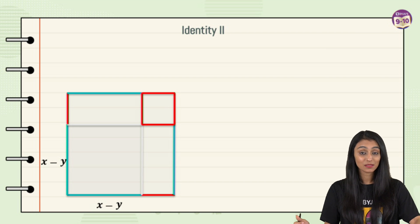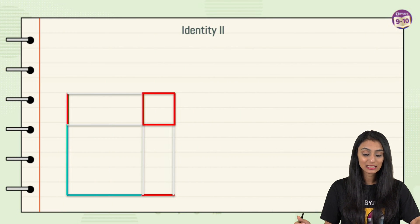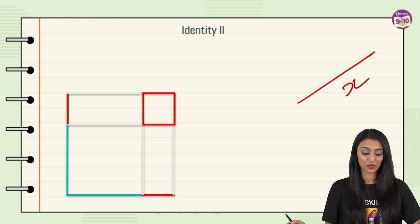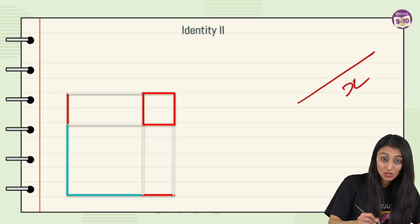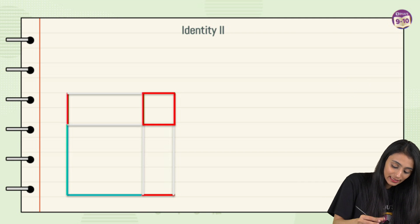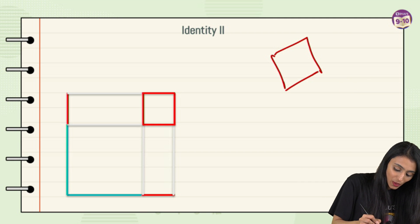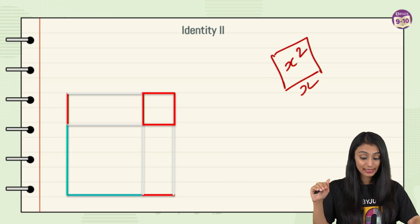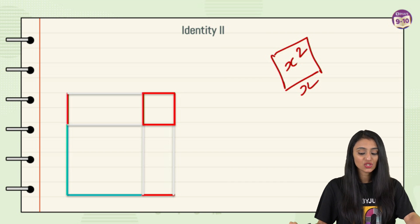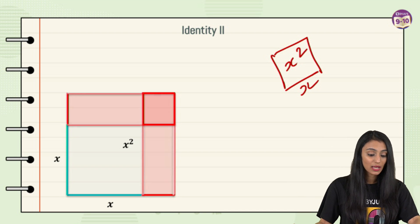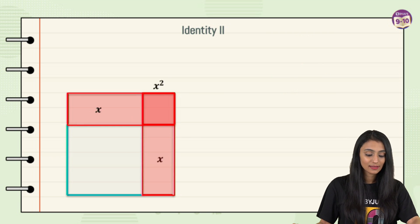Let's consider the entire length that was initially x. The bigger square, with all sides in blue, has area x² — that's the assumption we started with, a side length of x. Now let's look at the remaining region in red.